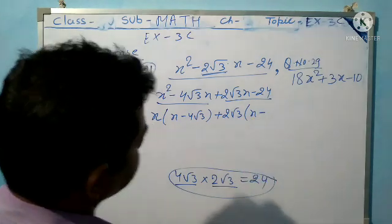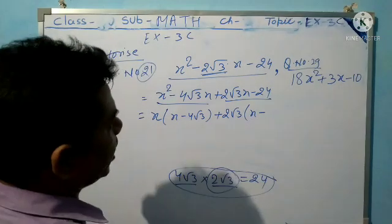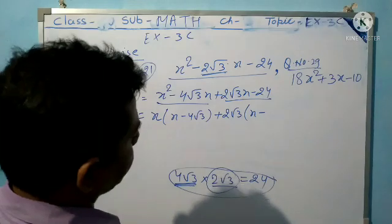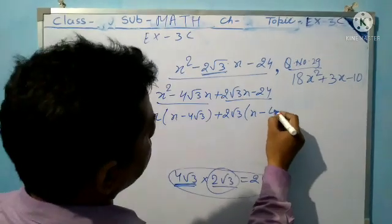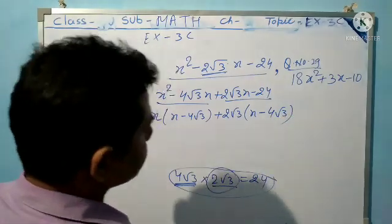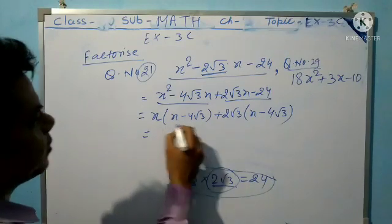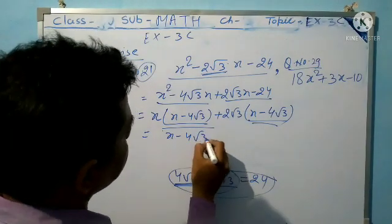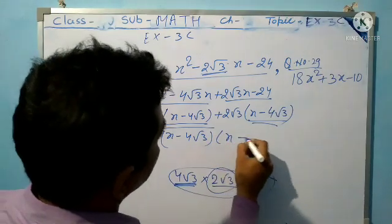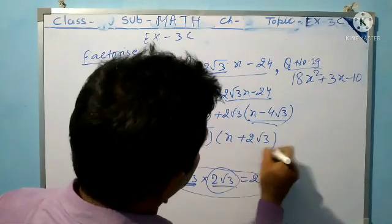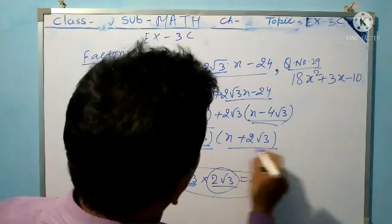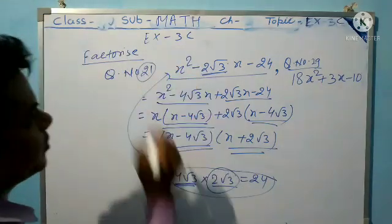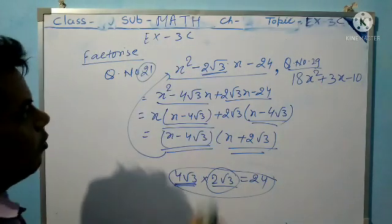Taking two terms: x(x - 4√3) and 2√3(x - 4√3). The common factor (x - 4√3) is taken outside, giving us (x - 4√3)(x + 2√3). That is the factorization of this term. Now another question is question number 29.